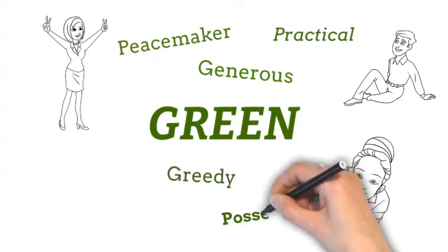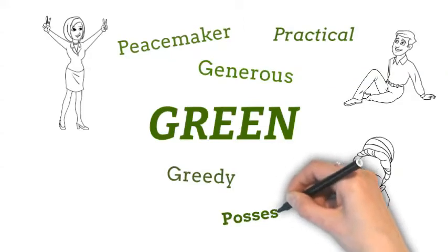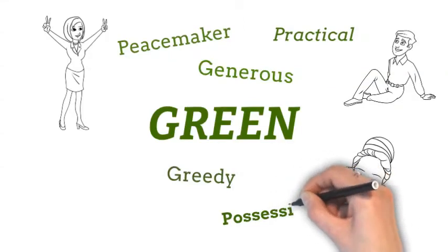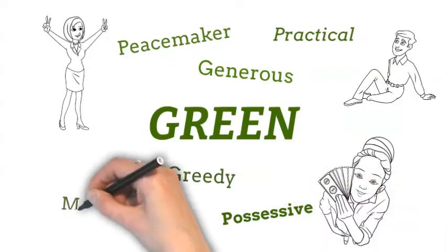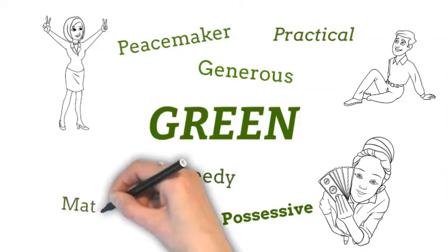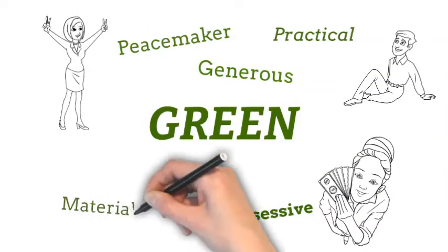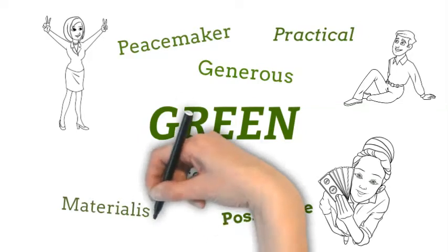The negative traits of people who love green are being possessive and materialistic, indifferent and overcautious, envious, selfish, greedy and miserly, devious with money, inconsiderate, inexperienced, a hypochondriac, and a do-gooder.